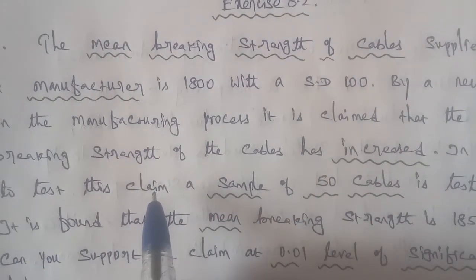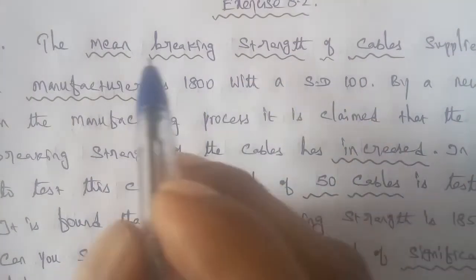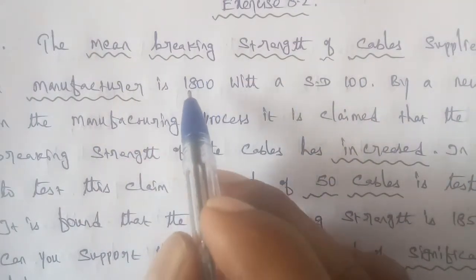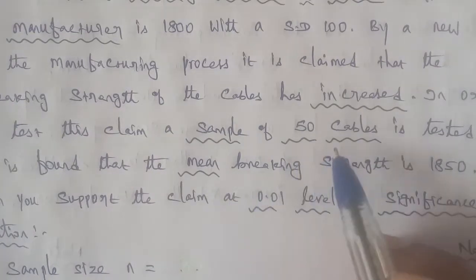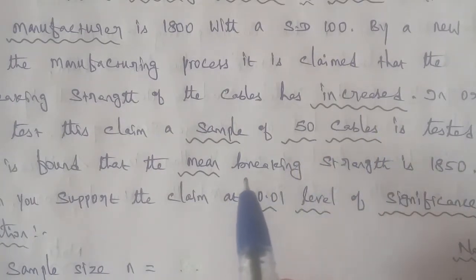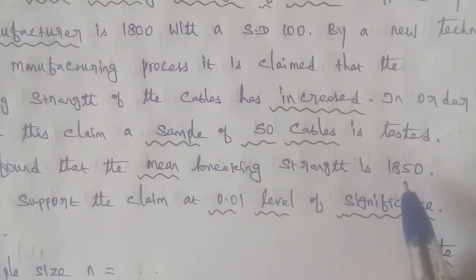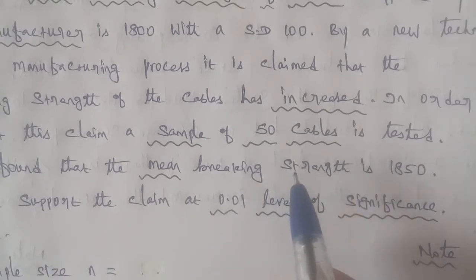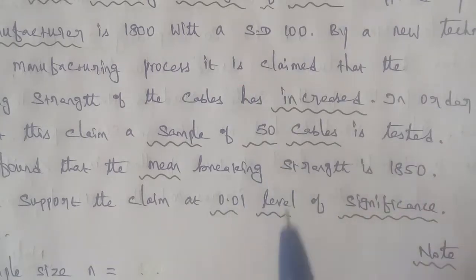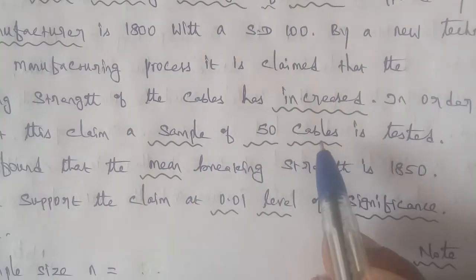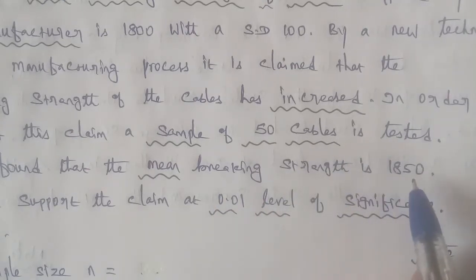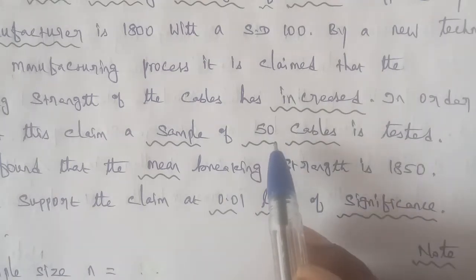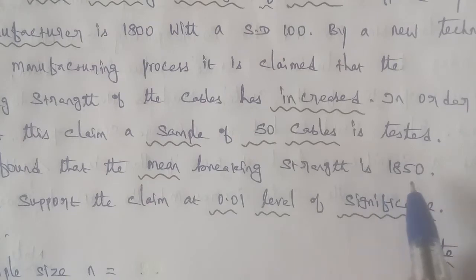From the given question: the manufacturer's cables have a mean breaking strength. The population mean is 1800 and the standard deviation is 100. The sample of 50 cables gives a mean breaking strength of 1850. So this sample mean x-bar is 1850, while population mean is the manufacturer's stated value.